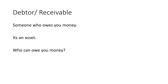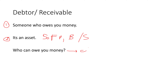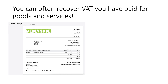A debtor or receivable, as you might know, is somebody who owes you money - it's an asset on your books, so it's on the balance sheet. Who can owe you money? Well, normally in the course of normal business it'll be your clients. But I also want to point out it can be HMRC - the tax man. Normally you owe money to HMRC, but in some cases HMRC can owe you money as well.